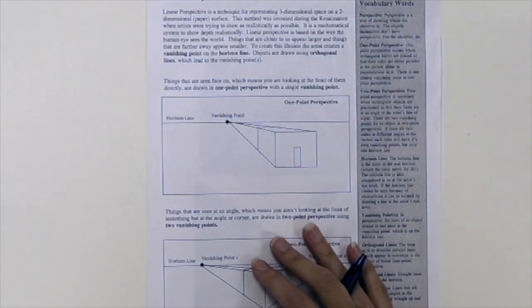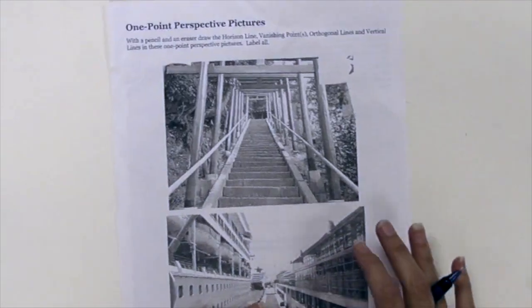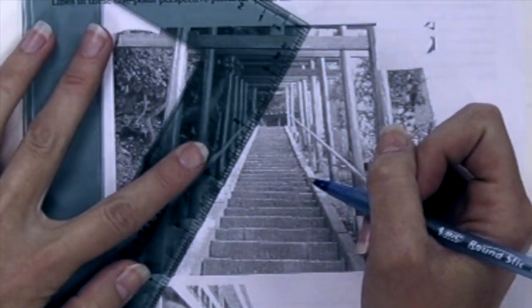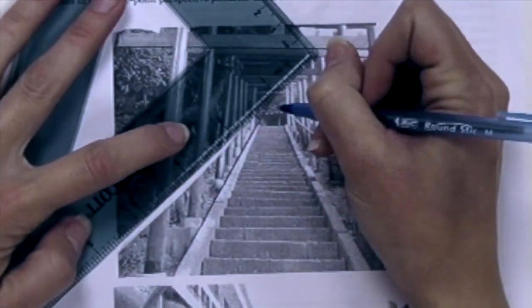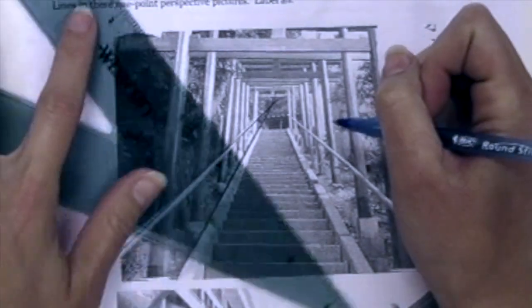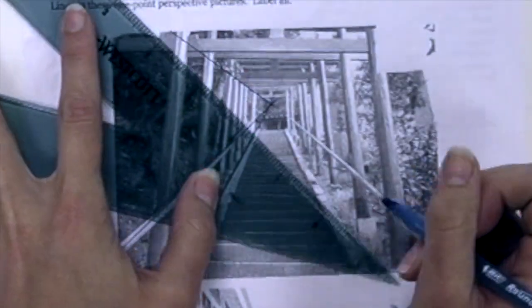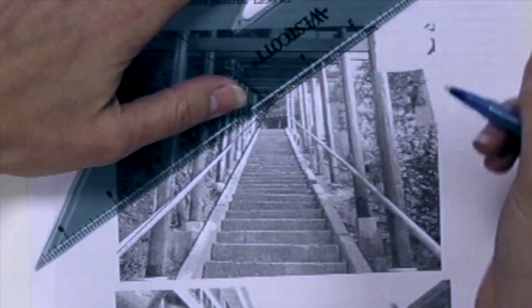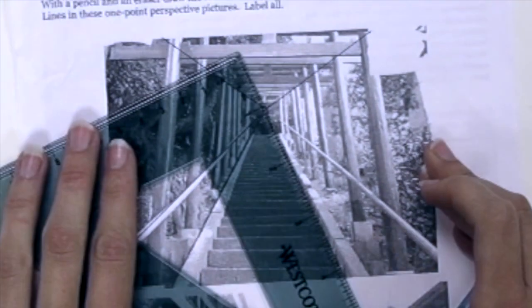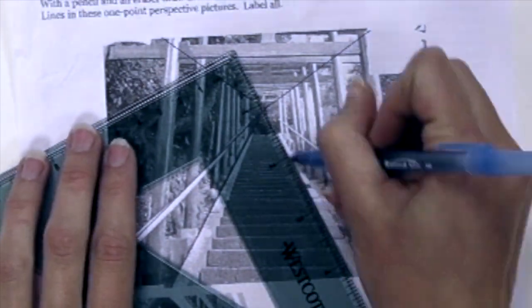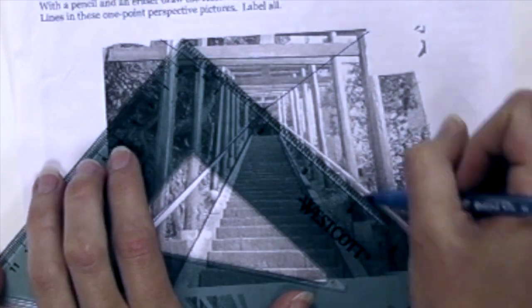I'm going to work through portions of this perspective packet with you. Using the angles that you can see on the photograph, draw lines past where you think you need to and look for where they intersect. Following all these different angles will help you to locate the vanishing point.